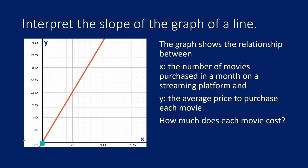Let's begin by finding two points that are easy to identify. This point is right at the origin, and this point is at a cross section between X equals 5 and Y equals 20.